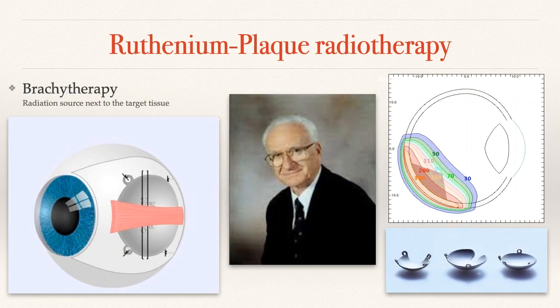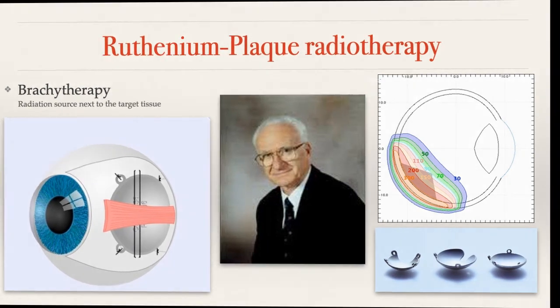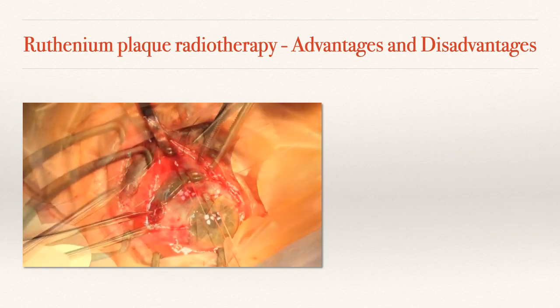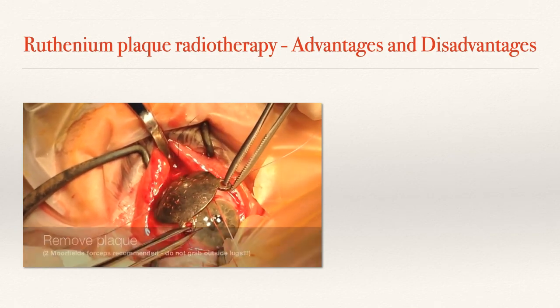Ruthenium plaque is usually our first treatment of choice if we can adequately access the tumour. The isotope is ruthenium-106, and the advantage is that you get localised radiation just around the tumour — you can be very specific with it, unlike any other form of external radiation source, which limits collateral damage. These are the little metal discs with little ears on the end, like a little teddy bear, where we put our sutures. We put it right over the eye, over the tumour, and suture it in place. This is what it looks like when we're inserting and removing it.